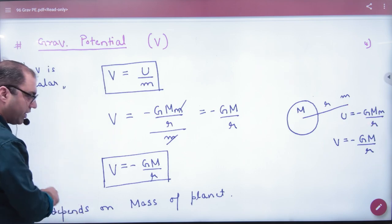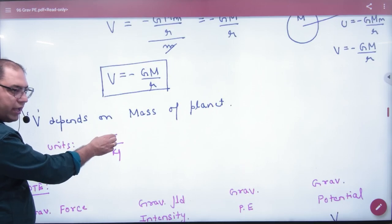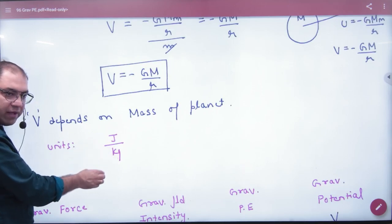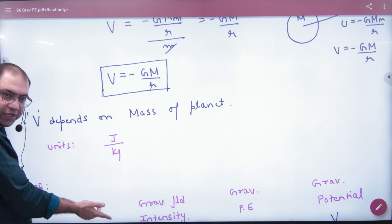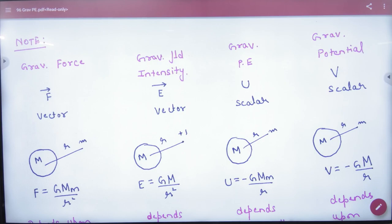Clear hai yahan tak. To ye, gravitational potential hai. Ab, is mein SI units ka hai, energy, per unit mass, energy joule, per unit mass ka matlab, joule per kg. To ek cheez note karo, ab humne kul mila ke, chaar chizein kar li hai, pehla humne, kya kiya tha, force.